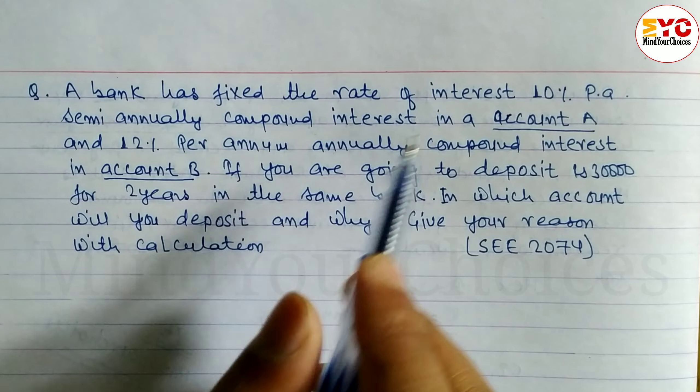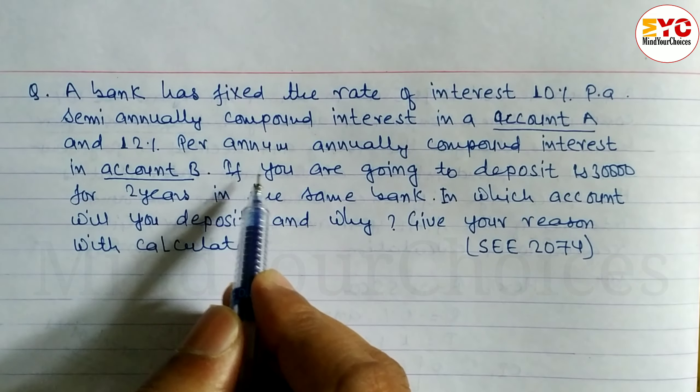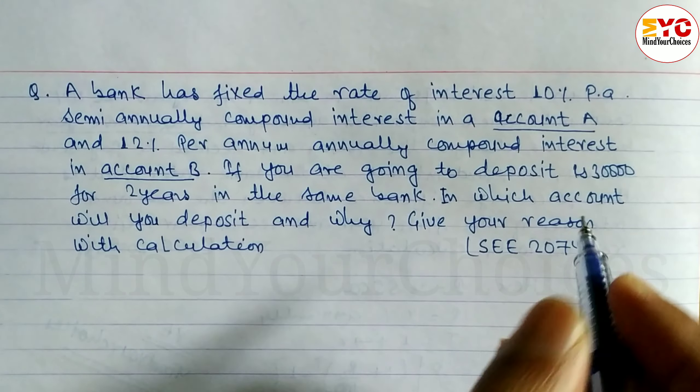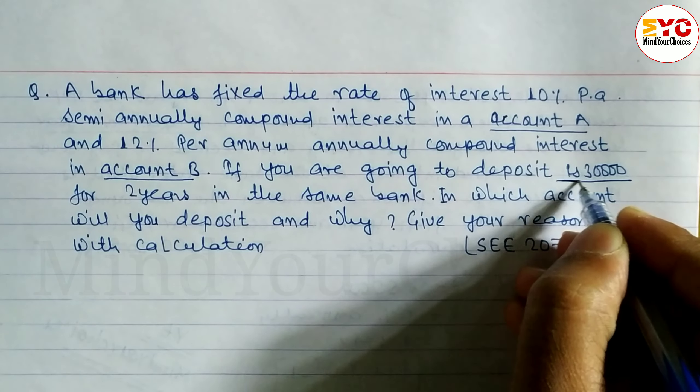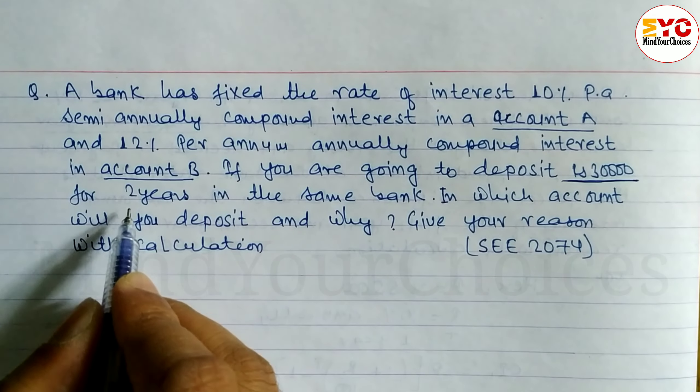Two accounts, A and B. Account A has semi-annually interest, and 12% per annually compound interest in account B. If you are going to deposit 30,000, the principal is 30,000 for 2 years.